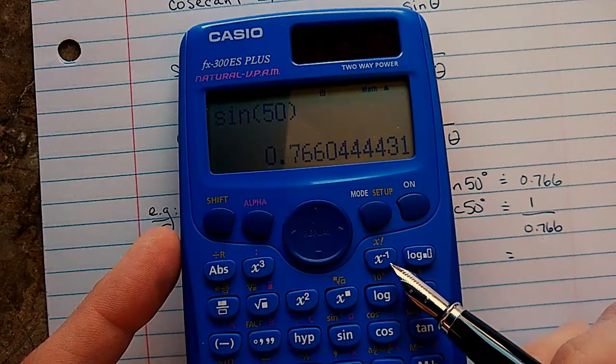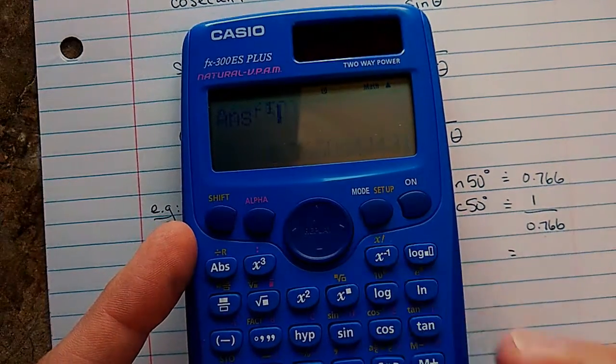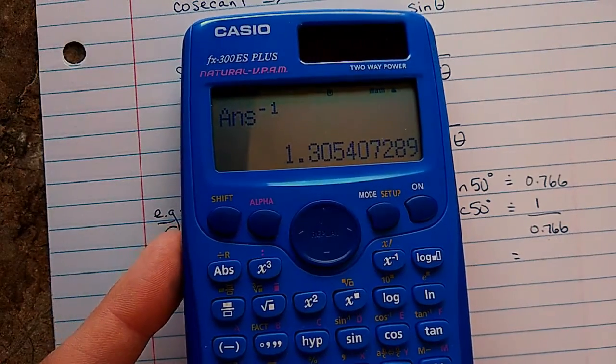That's the reciprocal button. That'll flip over this number. 1 divided by that number. Press it once. Press enter. And you can see I get the same number there, about 1.31.